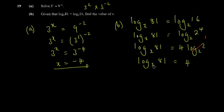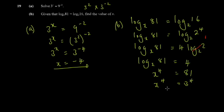Once you have log base x of 81 = 4, take the base x and rewrite it: x^4 = 81. Matching powers, 81 = 3^4, and 4 matches 4, so x must equal 3. Therefore x = 3.